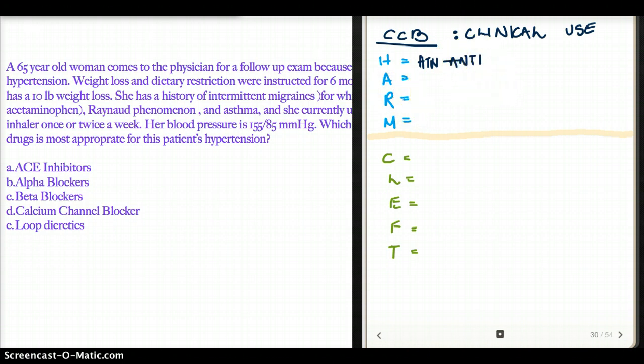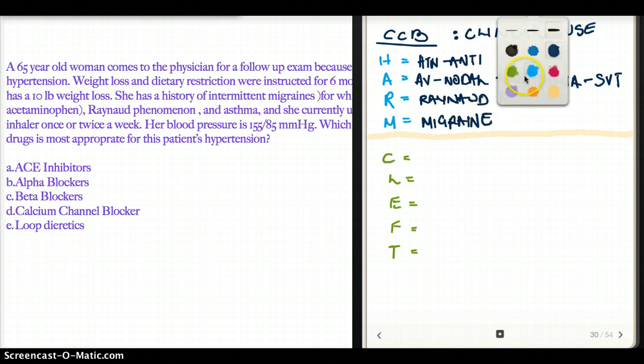A is going to be for AV nodal arrhythmia. We all know that calcium channel blockers are going to block the calcium channels of the AV node and the SA node. So it has a big effect on the cardiac rhythm, the electrical activity of heart. It's going to prevent AV nodal arrhythmia, so we can use it in supraventricular tachycardia. It's also used for the treatment of Raynaud's phenomena. It also has some beneficial effect in migraine. I think this seems to be the perfect drug.